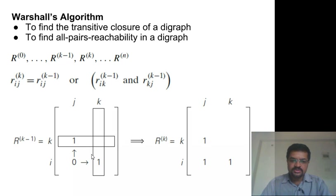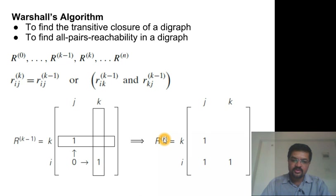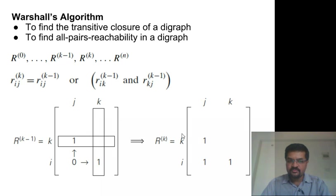That idea is depicted here. Suppose there is no path from i to j in Rk-1 — meaning with only vertices 1 to k-1 as intermediate vertices, we don't have a path from i to j. But if there is a path from i to k, and then from k to j, then with transitivity we now have a path from i to j in Rk because k can be used as an intermediate vertex. So any 1s in Rk-1 are carried forward in Rk, but 0s can turn into 1 if k can be an intermediate vertex — we look at the kth row and kth column.